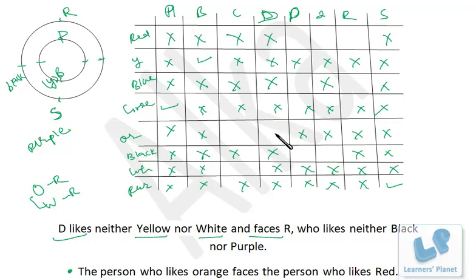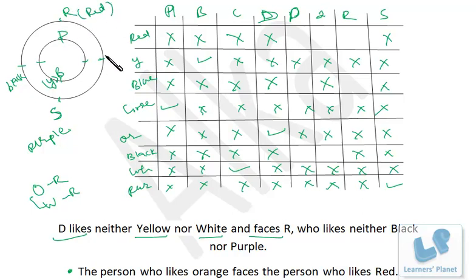Looking at D's row, only one box is empty — so D likes orange. That means orange is not liked by C, so C and white are the right combination. Now we have all colors assigned. Looking at the outer circle: Q's only remaining color is black, so Q likes black. And black is cancelled for P, leaving blue for P. Now we know all color assignments.